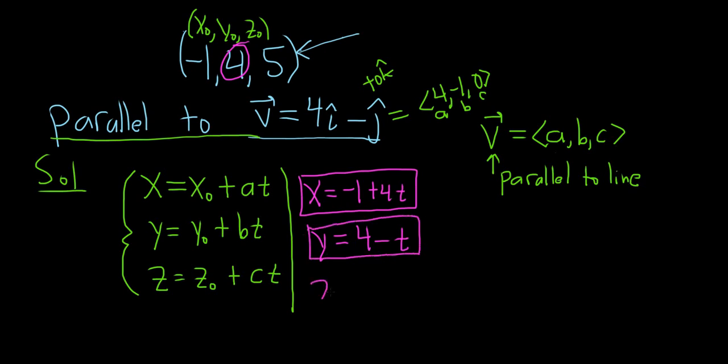And the last one is z equals, well, z naught is five. And then here's the interesting part. c is zero, so we don't write it because it's zero t. And that's it. These are the parametric equations of the line in space.